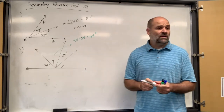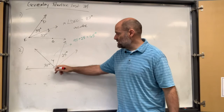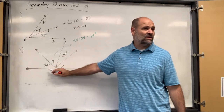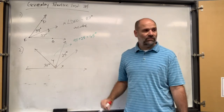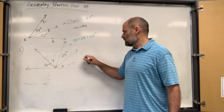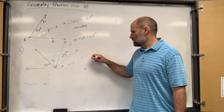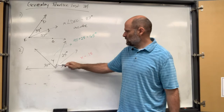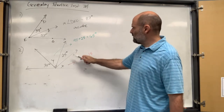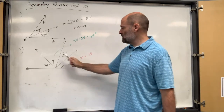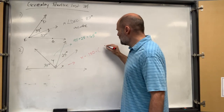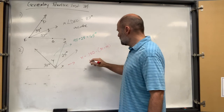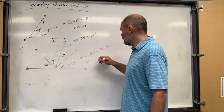Now if you add 65 and 35 together that's 100, and then x has to make the whole thing 180. So 180 minus 35 plus 90 gives us 55. So x is 55.